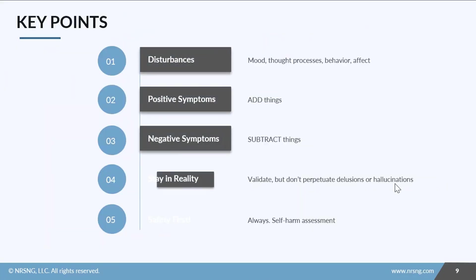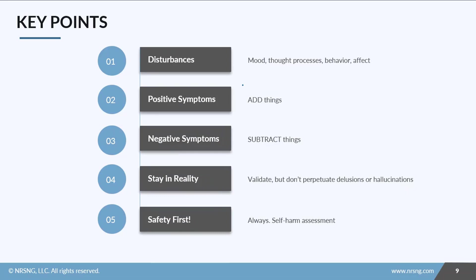Let's recap. Schizophrenia involves disturbances in mood, thought processes, behavior, and affect. They'll have positive symptoms, which add things to their cognition — like hallucinations, delusions, or bizarre behavior — and negative symptoms that subtract things like a decreased emotional range or a loss of interest.